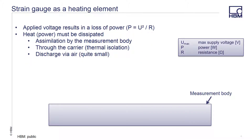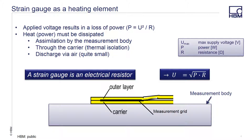A strain gauge can be seen as a heating element. According to Ohm's law, the power through the strain gauge can be defined as the excitation voltage squared divided by the resistance of the gauge. There are two ways to decrease the power through the gauge: decrease the excitation voltage or increase the resistance of the gauge. The grid foil in a strain gauge is very thin — 4 to 5 micrometers in most cases. With the power going through the gauge, that power in the form of heat needs to be dissipated or the gauge could burn up.